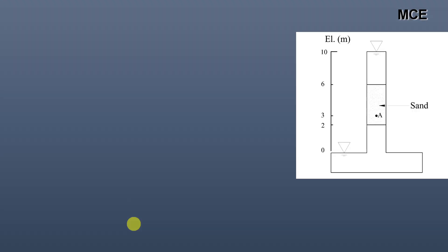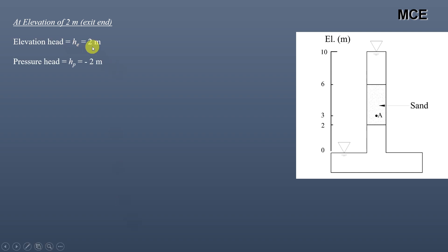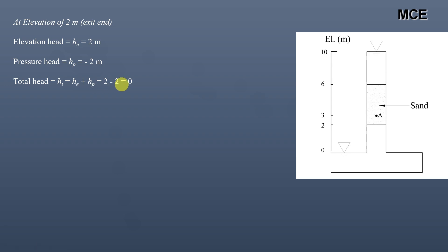At the elevation of 2 meters, which is the exit end of the soil sample, the elevation head is 2 meters. The pressure head is minus 2 meters because for the entry and exit ends, pressure head is directly established by the level of free water. The exit end communicates with elevation of 2 meters and the distance is 2 meters in the downward direction, so pressure head is minus 2 meters. Total head is 2 minus 2, which equals 0 meters. So the total head at entry is 10 meters and at exit is 0 meters — a head loss of 10 meters.